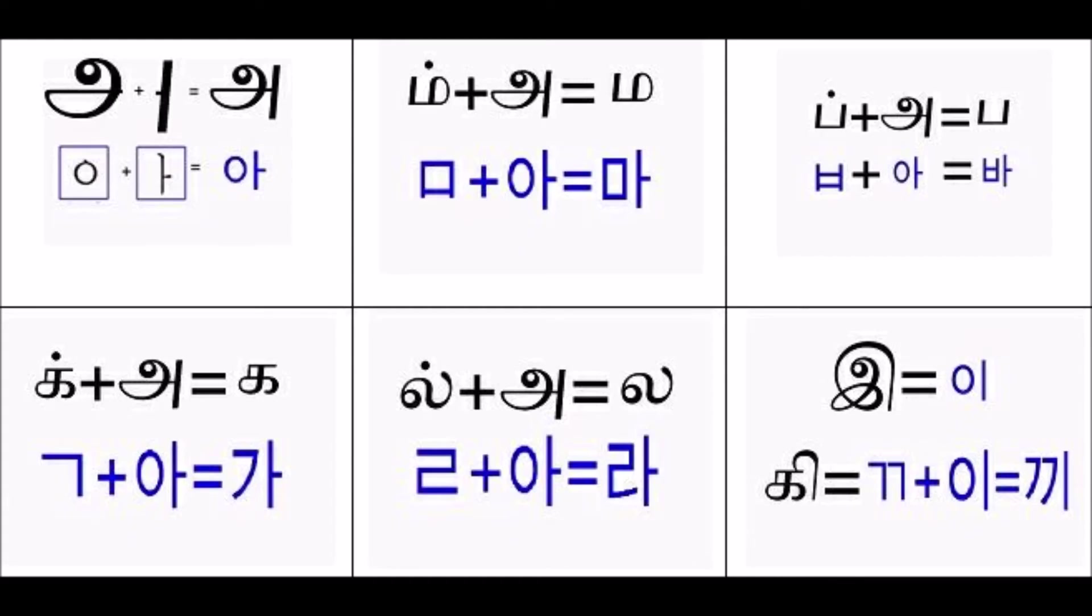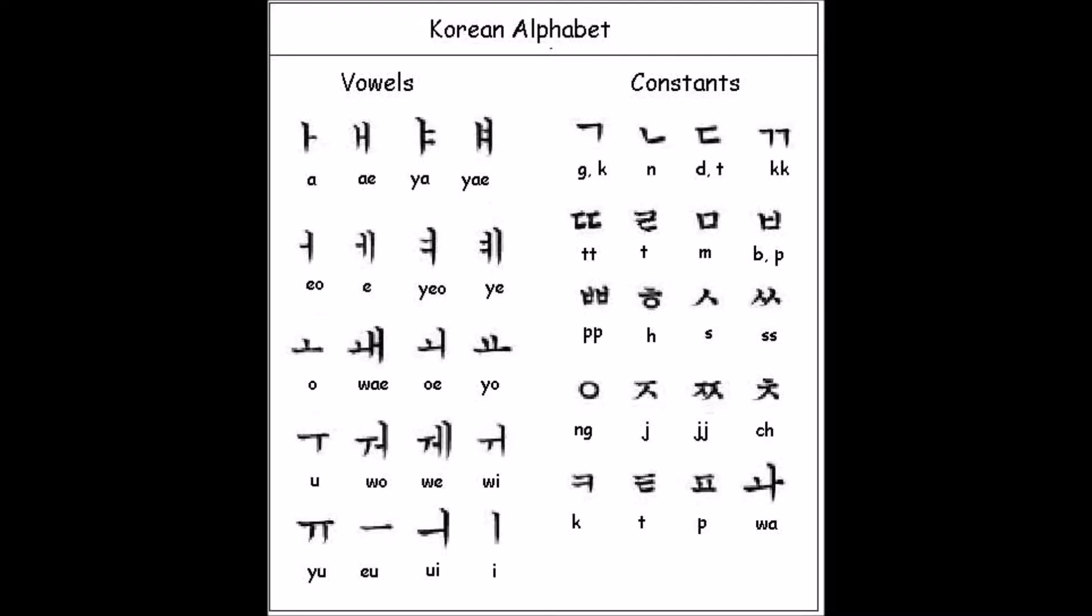Surprisingly, both took similar courses of evolution in a phonetical alphabetical system. This is particularly important for Korean letters to differentiate it from Chinese tonal graphical representation of vowels.